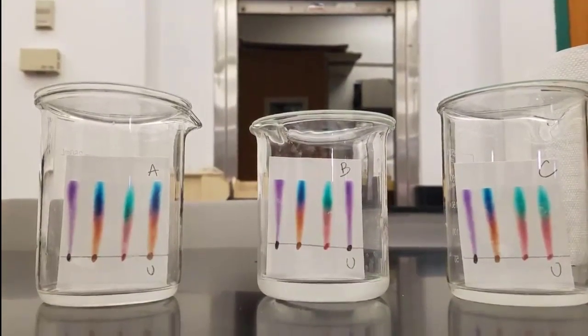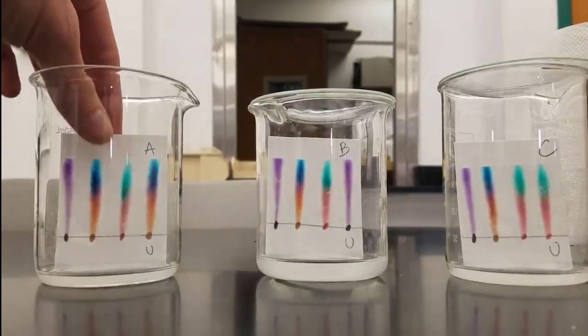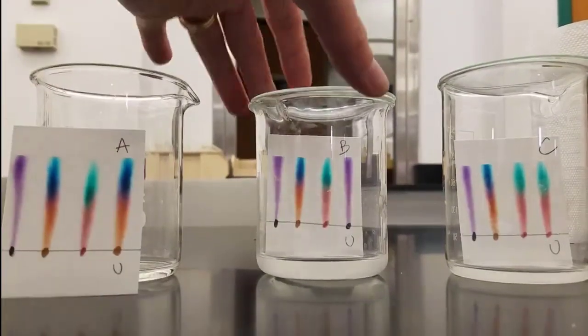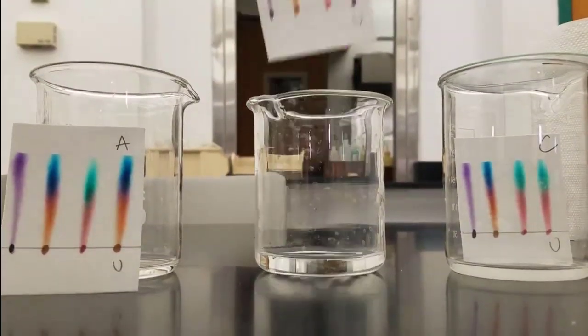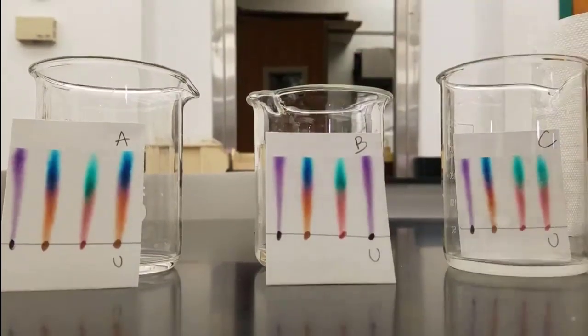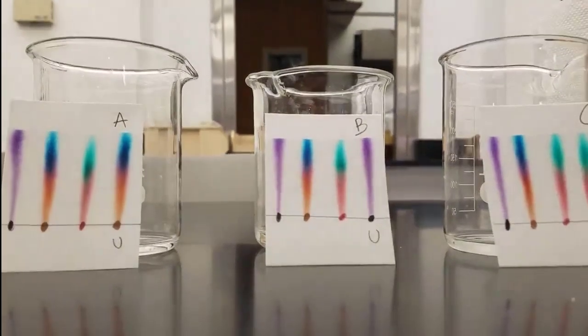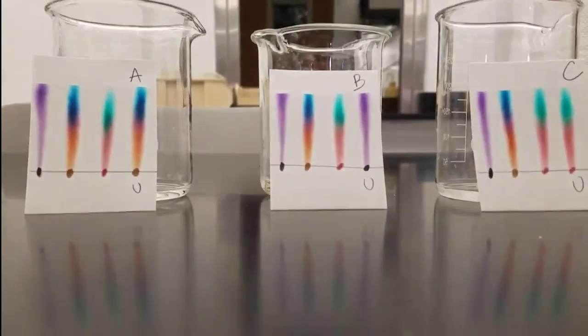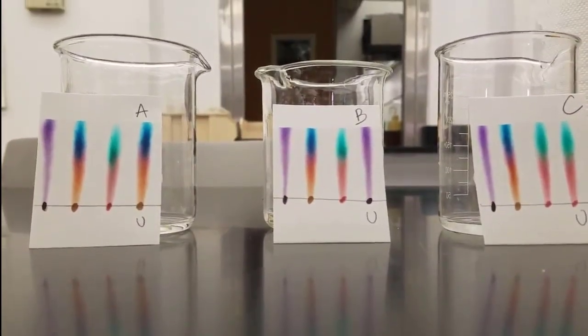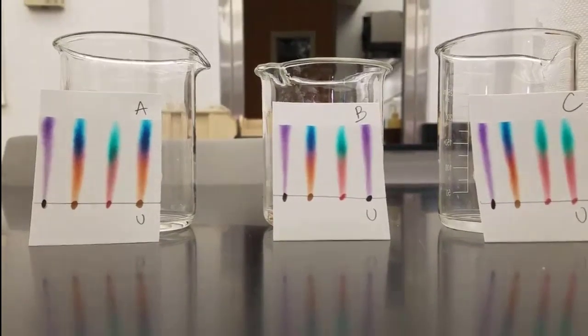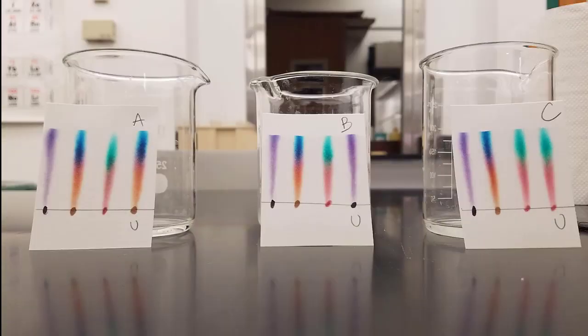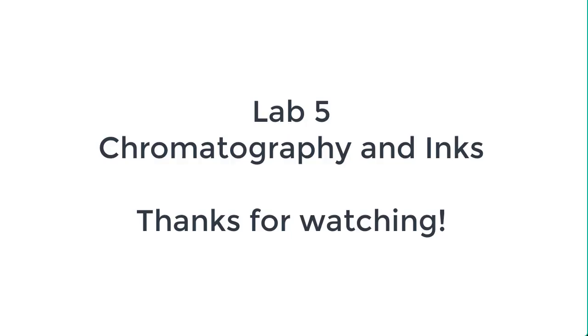And that should be pretty obvious as we get to the end here. So you'll pick one of these to draw in your lab report and then you will identify all three unknowns to say whether A is Sharpie, Crazy Art, or Crayola. Here's a picture you can pause if you need it. And that wraps up our experiment. Thanks for watching.